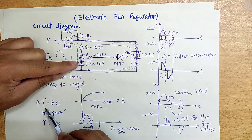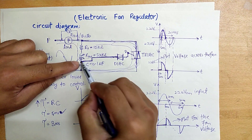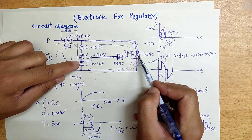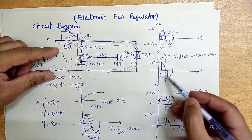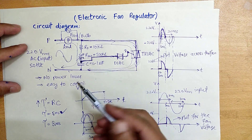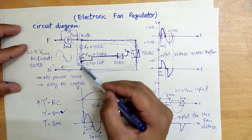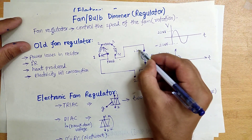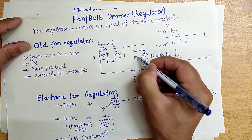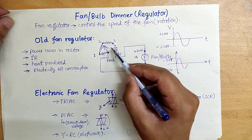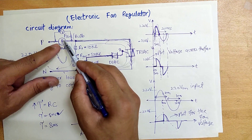In summary, the working principle is: current flows through the RC network, the capacitor charges, and when the voltage exceeds the DIAC breakdown, a signal is sent to the TRIAC gate, turning it on. The advantage of this circuit is that there is no large resistor carrying the full load current. The current through the RC network is in milliamperes — the main load current flows through the TRIAC, not through the resistors.